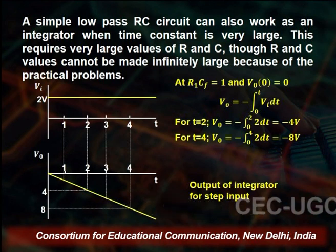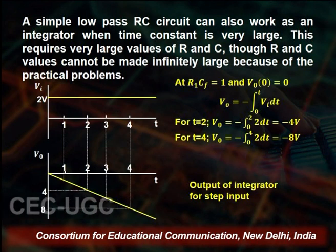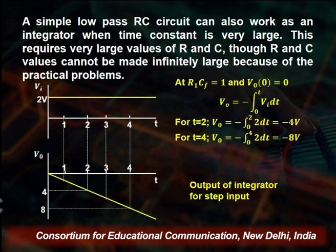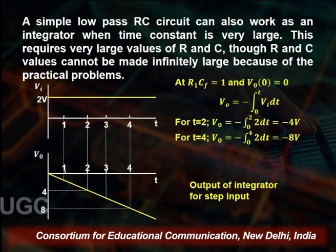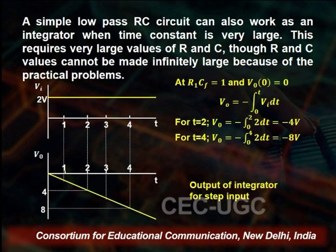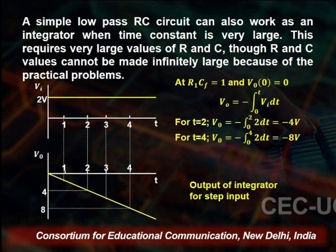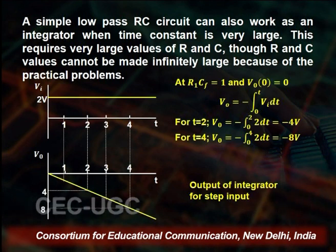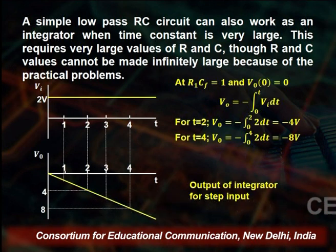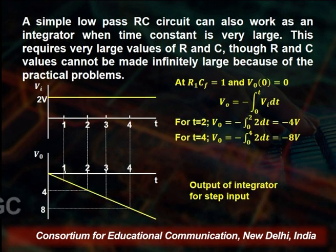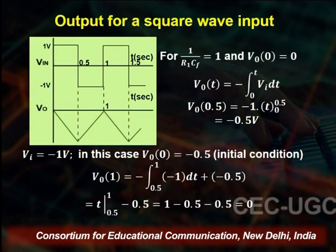A simple low-pass RC circuit can also work as an integrator when the time constant is very large, implying very large values of resistance and capacitance are needed. However, R and C values cannot be made infinitely large due to practical problems. Using very large resistance reduces current to nanoamp levels, impairing op-amp function. Very large capacitance adds bulk and involves very high voltages. Hence decent medium values of R and C need to be utilized.